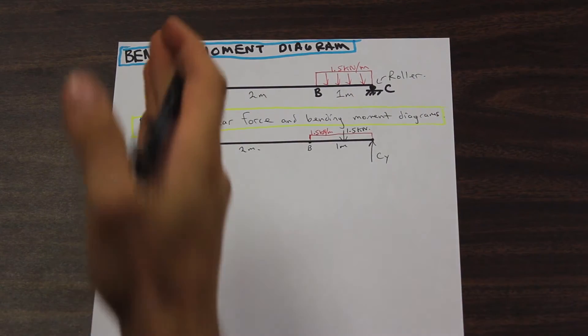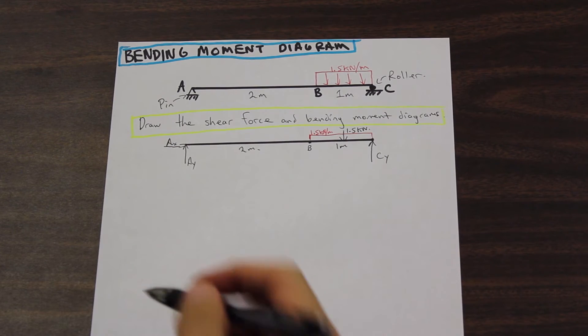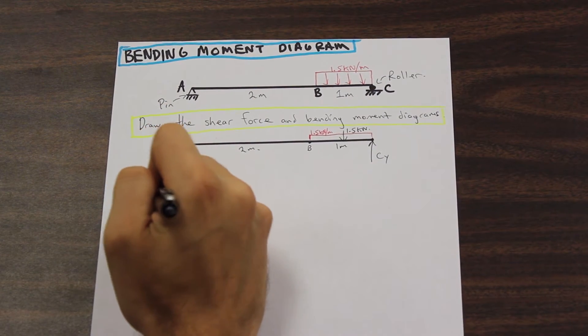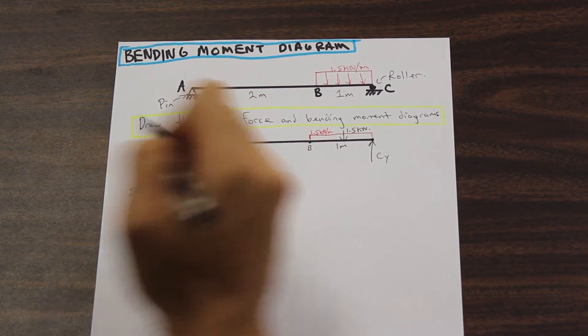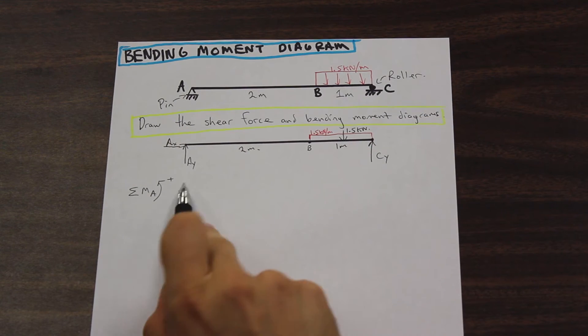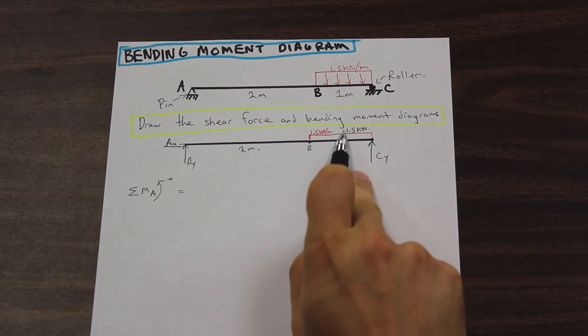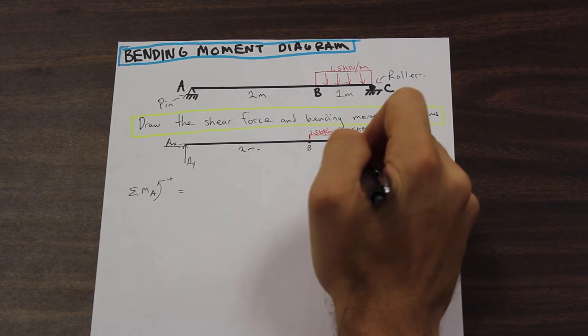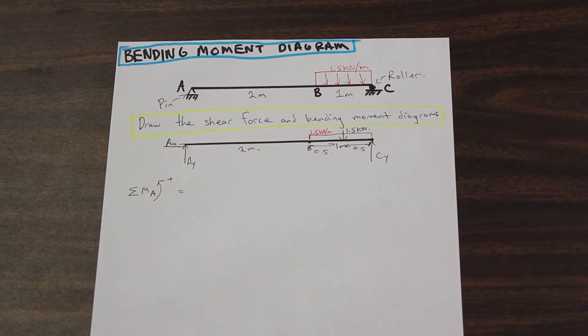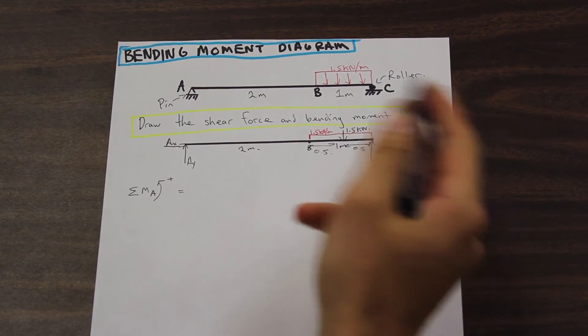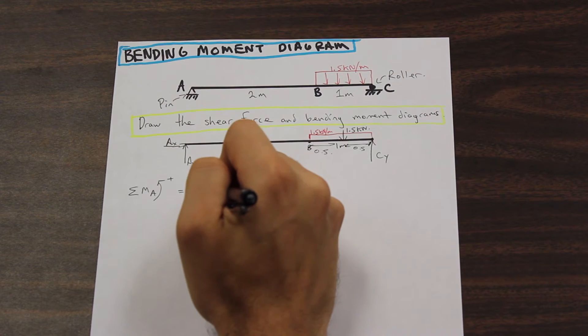So how we solve for AY and CY is we're going to take the moments about those two points. And we'll start with AY. We will say the summation of the moment at A, and we're going to give a positive direction here of counterclockwise. So we have 2 meters to B and then the force is actually acting halfway between the distributed load. So that's 0.5 meters on this side and 0.5 meters on this side. So the total distance from A to the force is 2.5 meters.